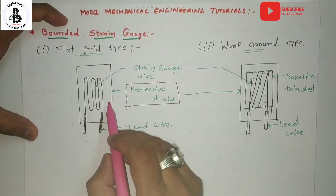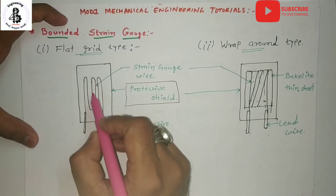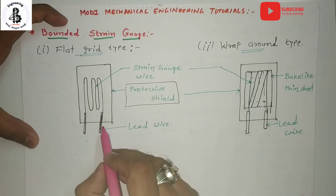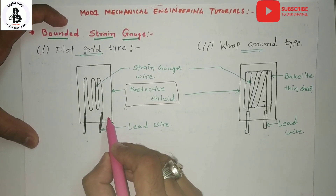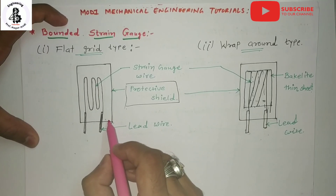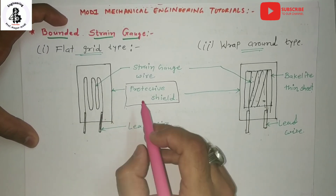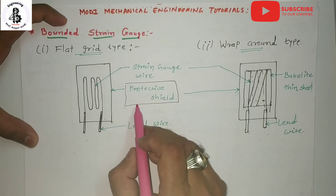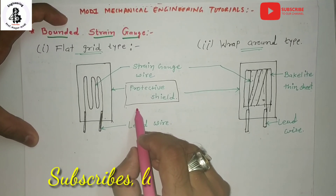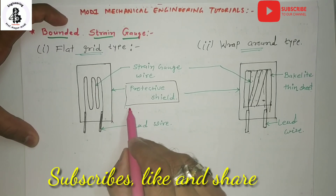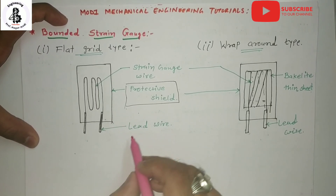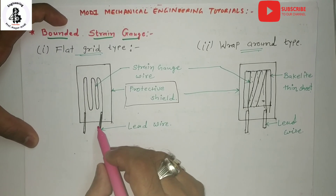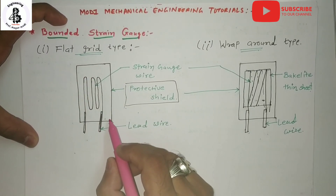In the flat grid type, the wire is rounded back and front as a grid, as seen in the figure. The grid structure is bonded to the backing material such as paper, epoxy bonding agent, or some adhesive, along with a protective cover. Since the ends of each section of the wire are looped around, the transverse strain also causes changes in resistance in that section of the wire. Lead wires are connected to the system to reflect the change in strain.